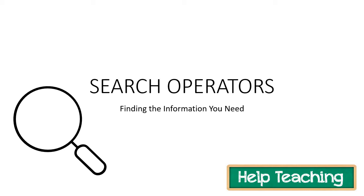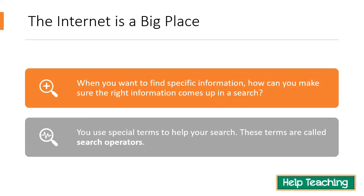Search operators: finding the information you need. This lesson will help you conduct more effective searches on Google, other internet search engines, or in databases. The internet is a big place — when you conduct an internet search, you can get thousands, hundreds of thousands, or even millions of results. You can use special terms called search operators to help narrow down or broaden your search to find the exact information you're looking for.